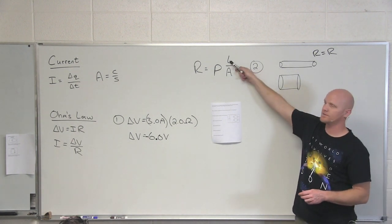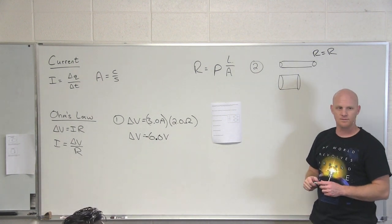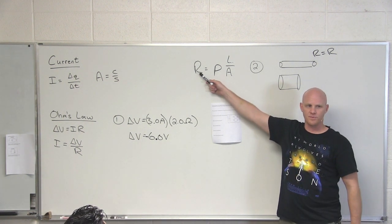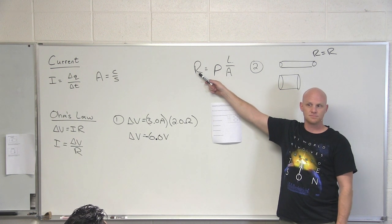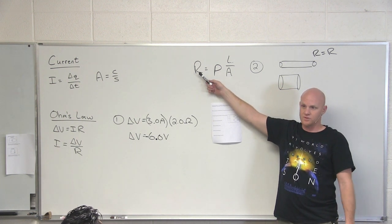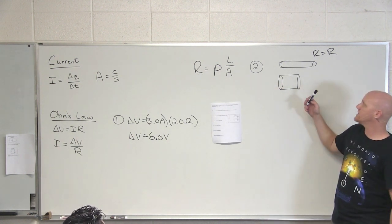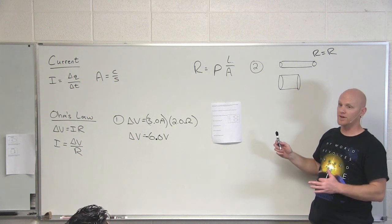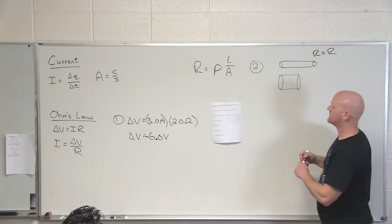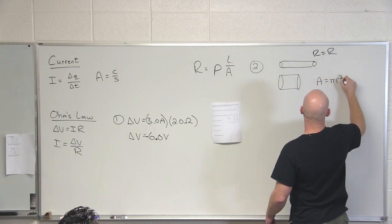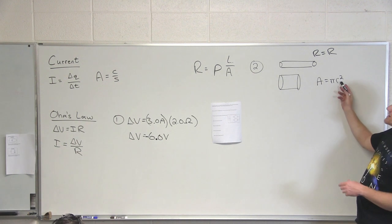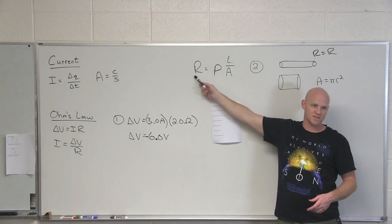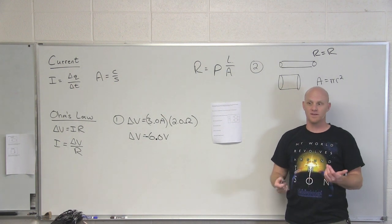So what did we do to the length? Decreased by factor two, what would the effect on the resistance be? Also decreased by factor two, so half the resistance. Okay. What did we do to the diameter here, or the radius? We tripled it. What does that do to the area? Good. It makes the area nine times bigger. And so in this case, if the area is nine times bigger, what does that do to the resistance? Makes it nine times smaller.